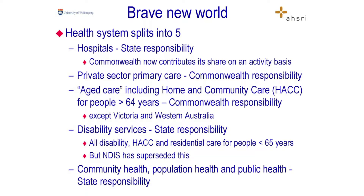We got the National Health Reform Agreement in 2011. We had a whole process which said the biggest problem in the healthcare system is integration — and the solution was to split the system into five structurally. Hospitals are now a state responsibility, with the Commonwealth contributing its share on the basis of activity. Private sector primary care: Commonwealth subsidies via the Medicare Benefits Schedule. Aged care, including home and community care for people over 65, is now a Commonwealth responsibility — except they've split health and ageing, with ageing going off to a new Department of Social Services, and Victoria and WA didn't agree anyway. Disability was a state responsibility, but the NDIS is now largely superseding that. And the Commonwealth decided that population health, public health, and community health are all a state responsibility with no Commonwealth funding for them.